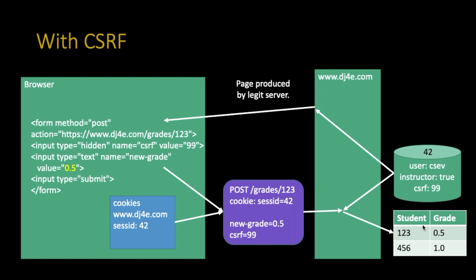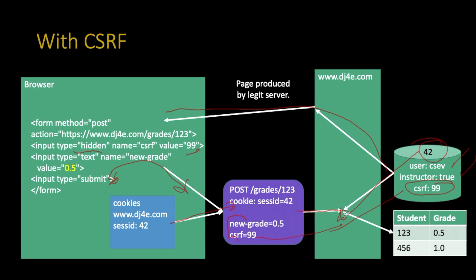With CSRF protection, the legitimate server adds another value in the session — not the session ID, but a large randomly chosen number. When a legitimate page comes out, it uses a hidden type variable and puts the CSRF value in. When you hit the submit button, the CSRF token comes in as post data along with the regular grade data, and the browser appends the session cookie. Using the session cookie, it re-associates the session, confirms you're C7 and the instructor, the CSRF matches, and so it lets you set the grade.